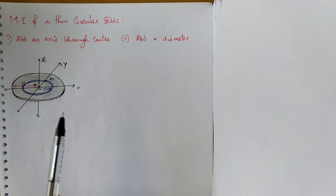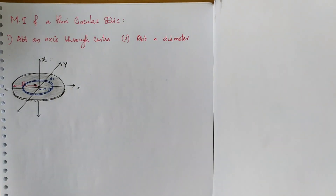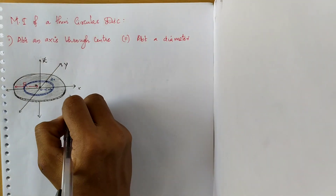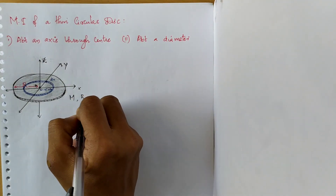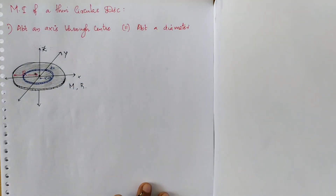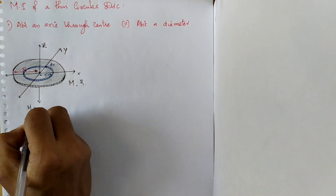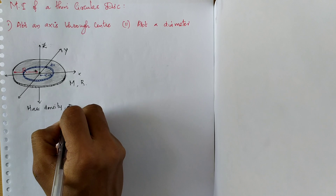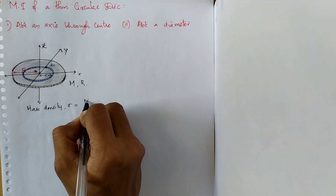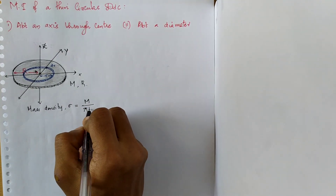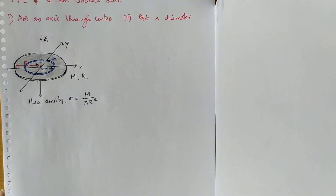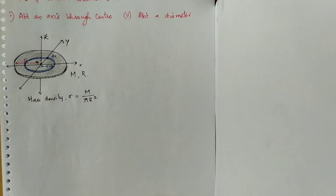We are taking the radius of one such ring as small r. For this disc of total mass M and total radius R, we define a quantity called the mass density sigma, given by the total mass of the disc divided by its total area pi R square. Sigma corresponds to the mass per unit area of the disc.